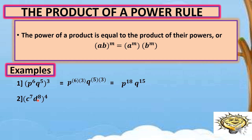Next: quantity c raised to 7, d raised to 8, raised to 4. So, 4 will be used to multiply to the exponents of variables c and d. We can write this as c raised to 7 times 4, and d raised to 8 times 4. Multiplying: 7 times 4 is 28, and 8 times 4 is 32. Our final answer is c raised to 28, d raised to 32.